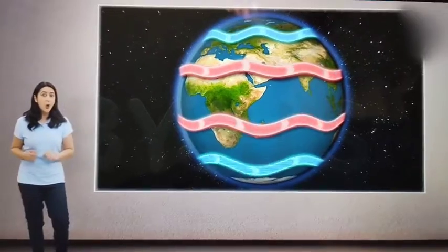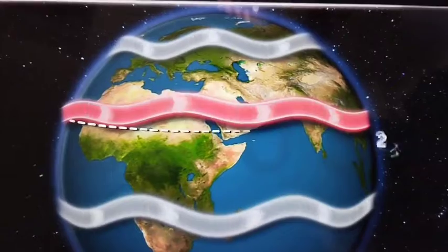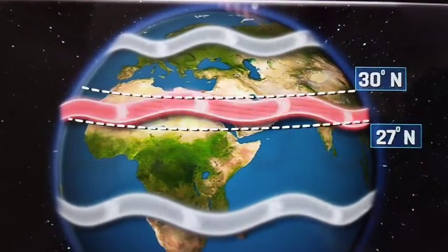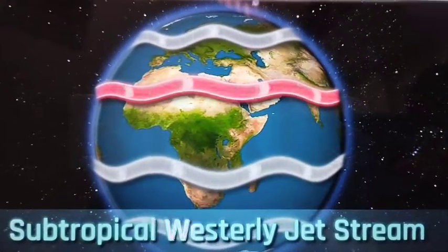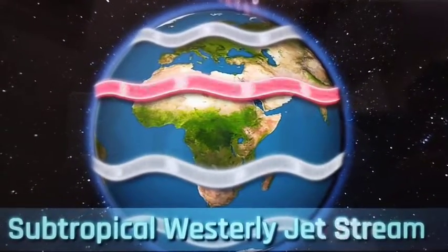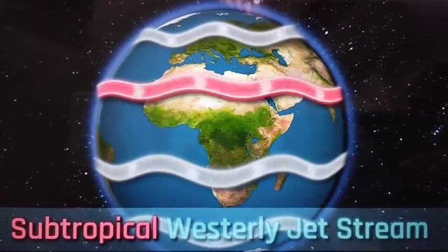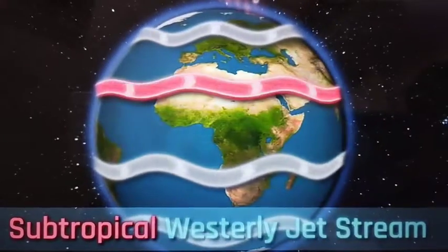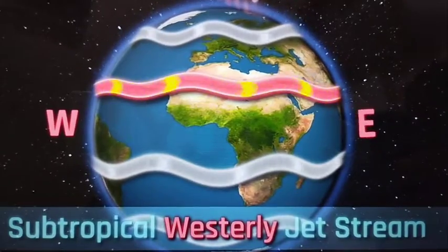Let's focus on one particular jet stream located approximately over 27 degrees to 30 degrees north latitude. This is known as the subtropical westerly jet stream. The prefix 'subtropical' is used because it flows in the subtropical region, and the name 'westerly' is given because it flows from west to east.